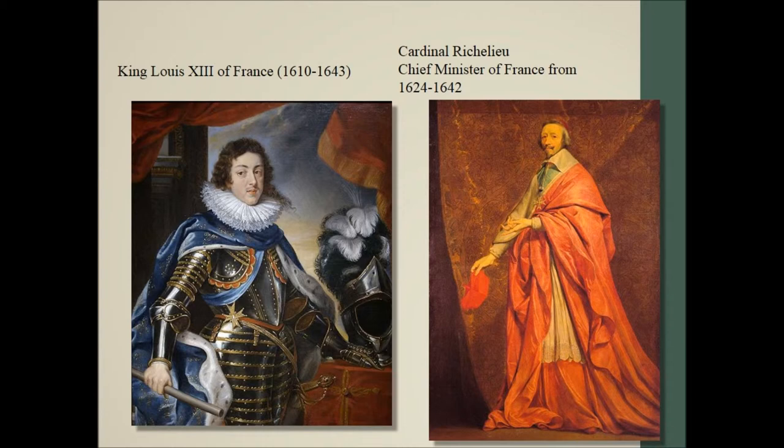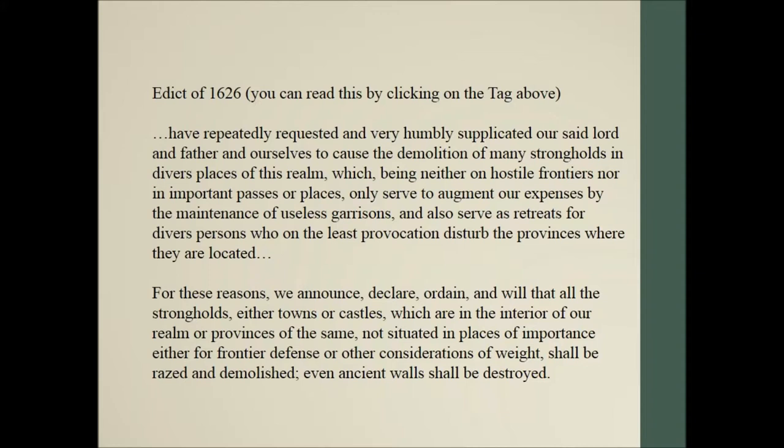Richelieu was very interested in controlling the Protestants. He had King Louis XIII pass a number of laws that made it really difficult for these people to not only practice their religion but to even own their property. In the next slide I'm going to show you something called the Edict of 1626. I want you to stop the video, click on the tag, and read part of this edict. It essentially is talking about getting rid of some castles, and most of the castles destroyed during this period belonged to the Protestants.